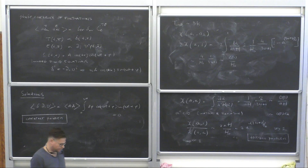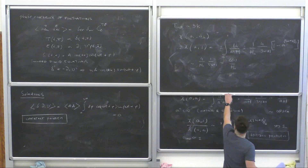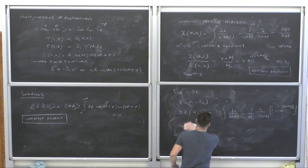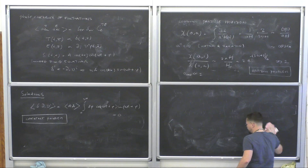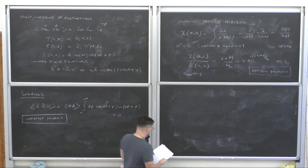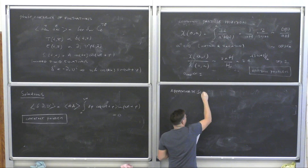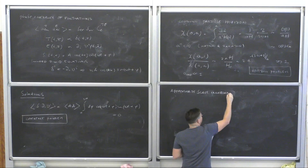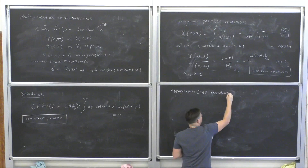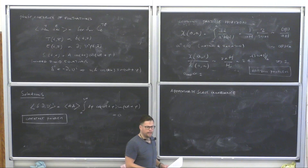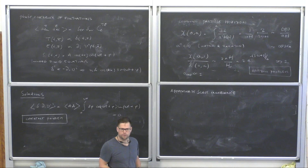The final thing before deriving a model of inflation is the approximate scale invariance of the spectrum. Remember the transfer functions derived previously. The Sachs-Wolfe contribution dominates on large scales. So the temperature fluctuation in direction n is given by ΔT/T = (1/4)Δ_γ + Ψ at last scattering — the Sachs-Wolfe contribution.